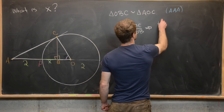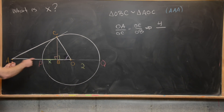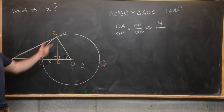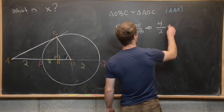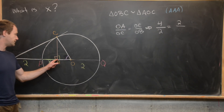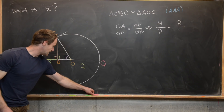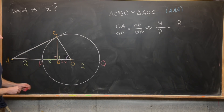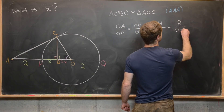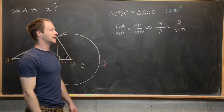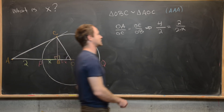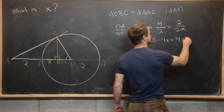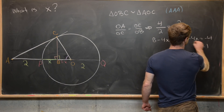OA is 4, because it's the distance from A to P (which is 2) plus a radius of the circle (also 2). OC is a radius of the circle, so that's 2. OB is going to be a radius minus the unknown x, so we write it as 2 minus x. So we have 4 over 2 equals 2 over 2 minus x. Cross-multiplying gives 8 minus 4x equals 4, then negative 4x equals negative 4, so x equals 1.